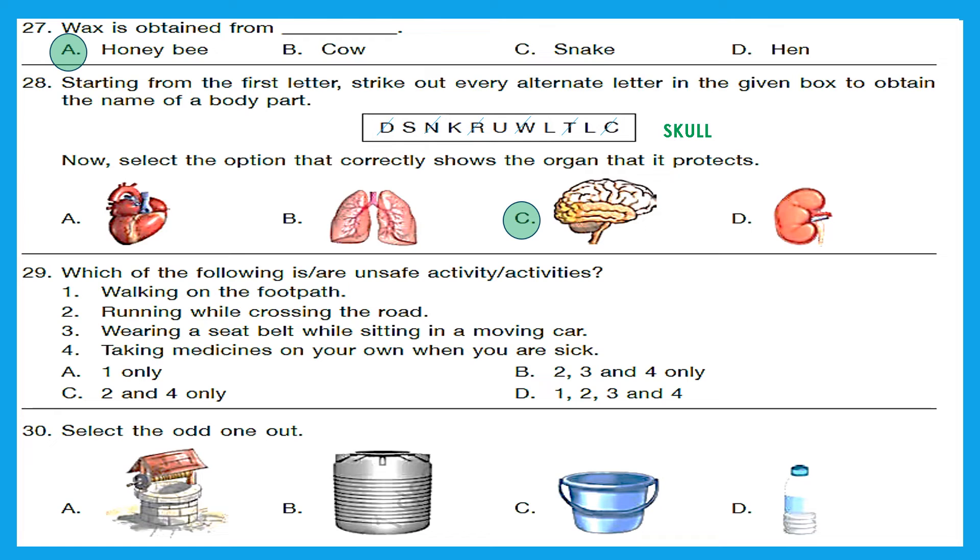Question 29. Which of the following is our unsafe activity or activities? Walking on the footpath? No, that's safe. Running while crossing the road? This is unsafe. Wearing a seat belt while sitting in a moving car? It is safe. Taking medicines on your own when you are sick? That is unsafe. So 2 and 4 only are unsafe activities. Option C is our answer.